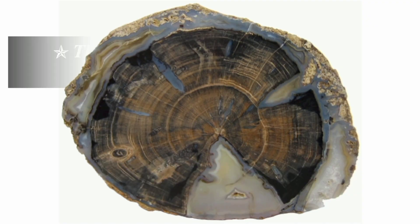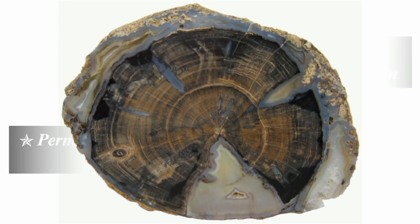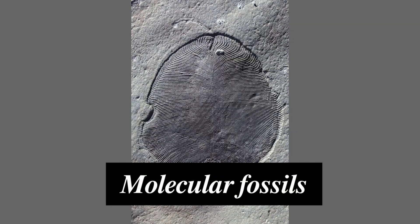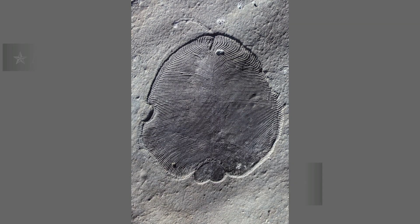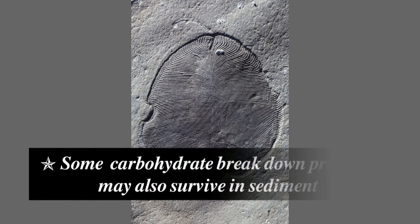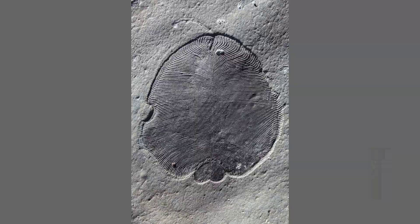Cast and Moulds commonly lack organic matter, but a resident structure may be preserved as a compression. Permineralization involves three-dimensional tissue infiltrated by minerals, allowing internal preservation. It occurs when plant tissues are infiltrated with mineral-rich fluid. Molecular Fossils are non-structural fossils that preserve organic compounds; some carbohydrate breakdown products may also survive in sediment.